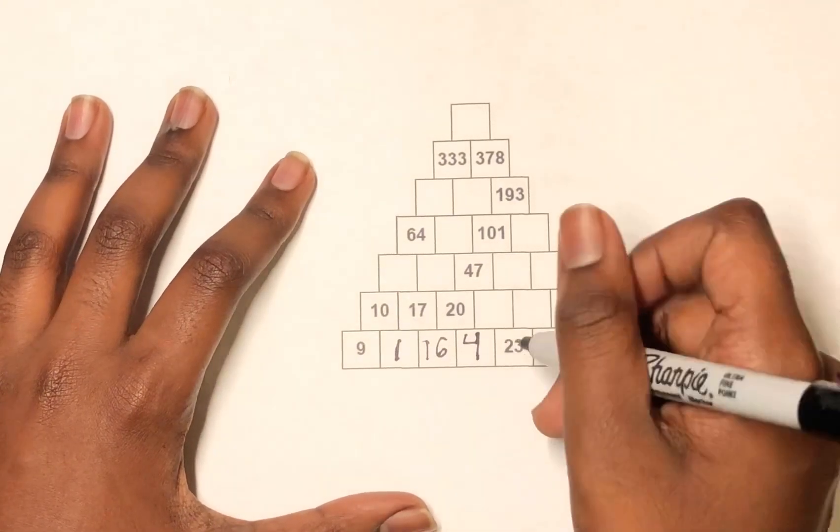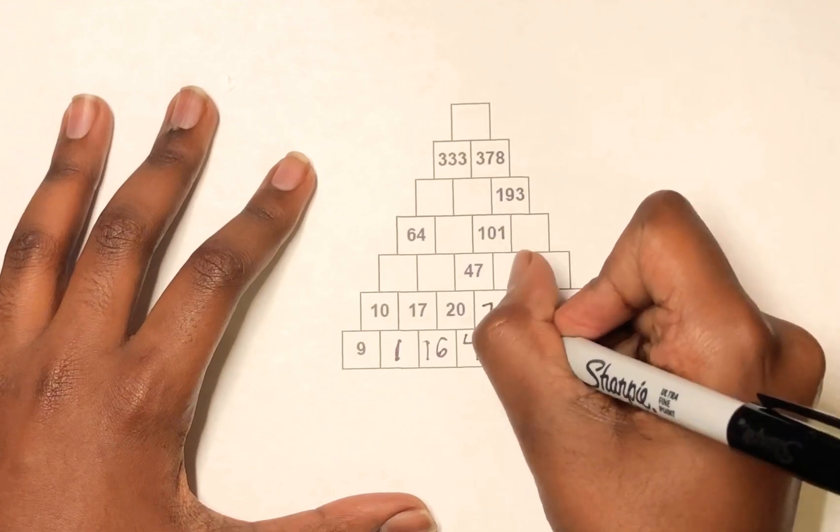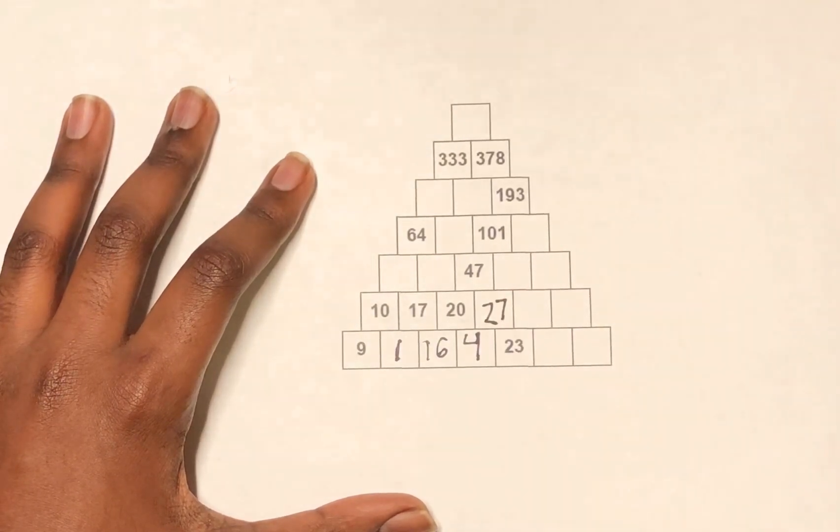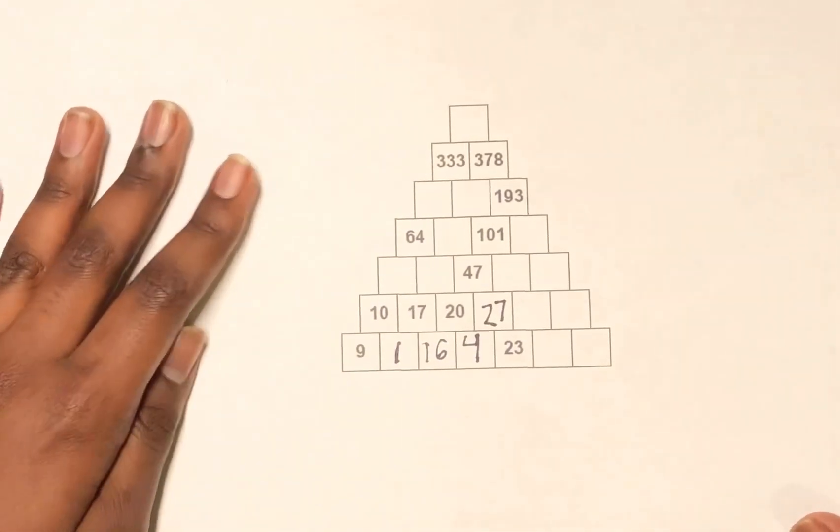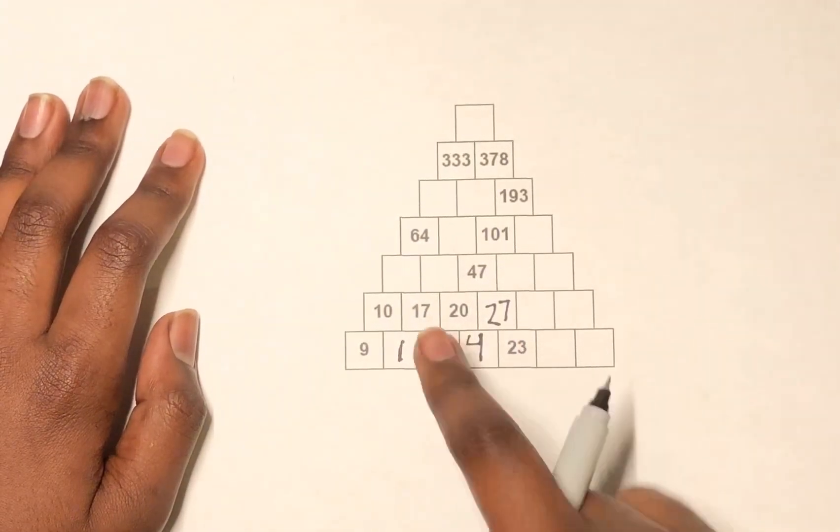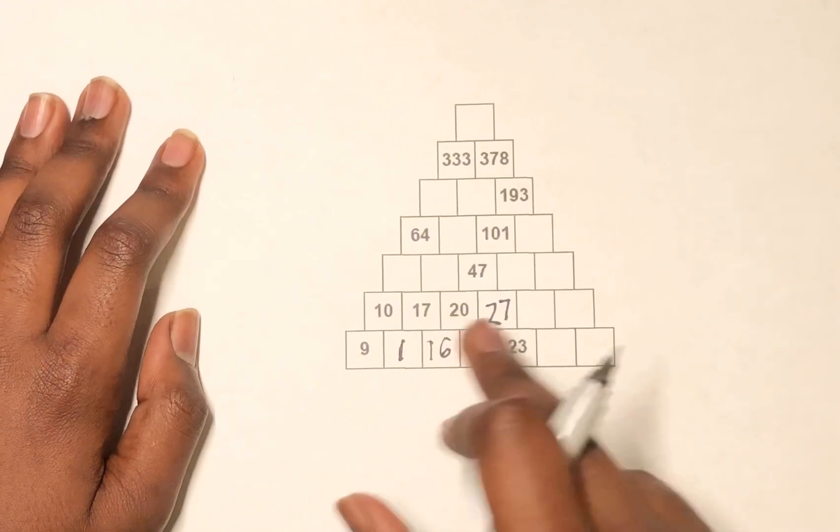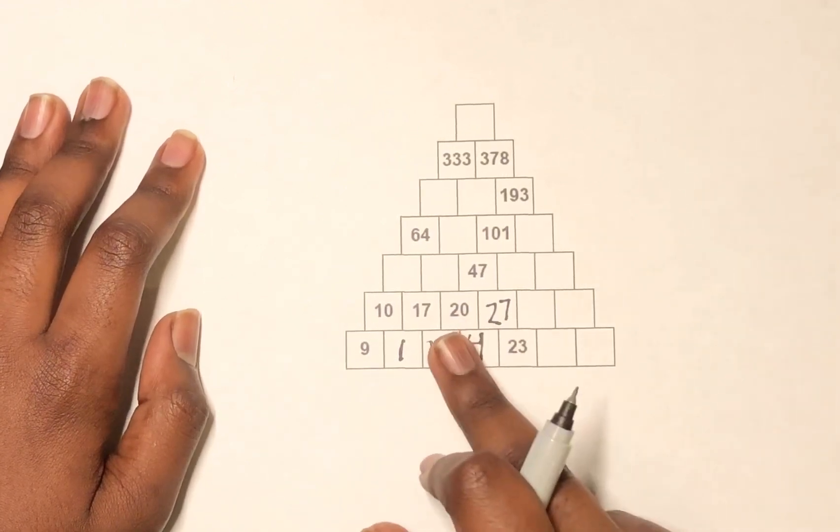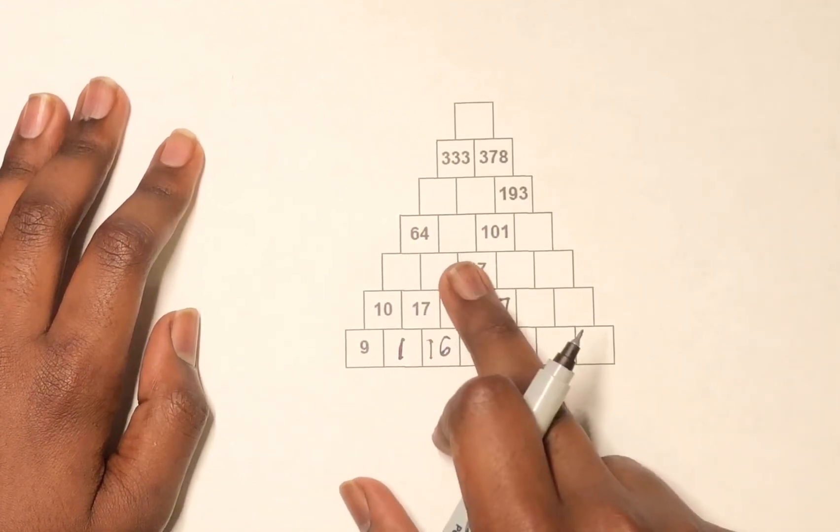Then 23 plus 4 equals 27. So you write it like that. Then you can check your work by seeing if the numbers match up. 20 plus 27 equals 47.